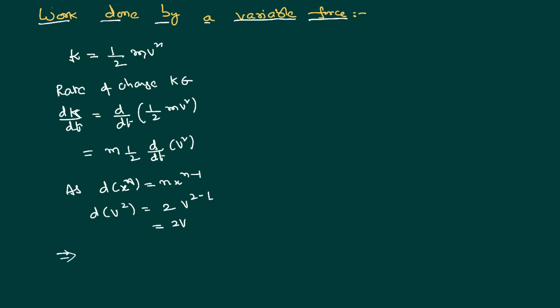By substituting this value in the above equation, we can write rate of change of kinetic energy is m by 2, and d by dt of v square is equal to 2v. Therefore, we can write rate of change of kinetic energy as m times dv by dt, which can be written as acceleration a, times v. We can write ma as f.